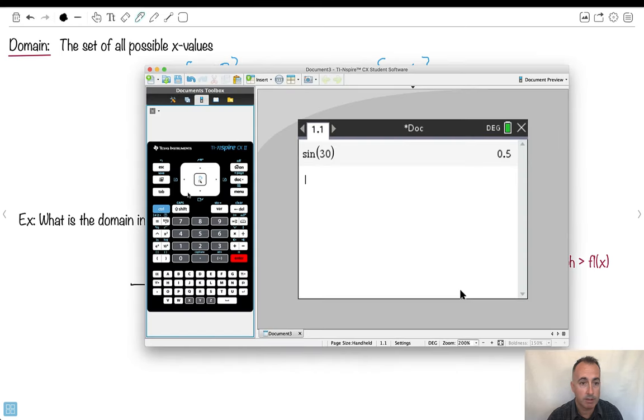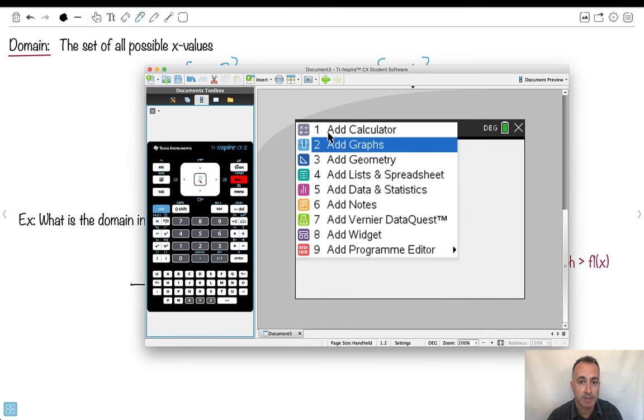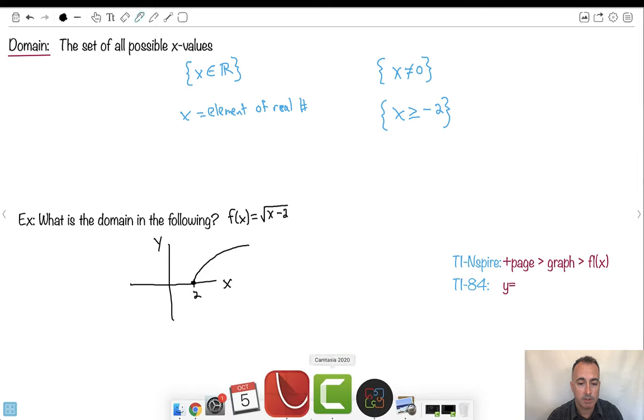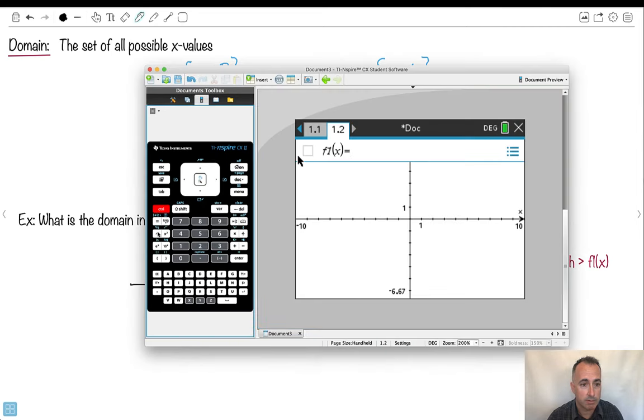If you don't believe me, no problem. Let's actually look at it on a graph. I'm going to open up a new page here. I'm going to see a new graph. By the way, if you're on the TI Inspire, do add page, graph, do f(x). If you're on the TI-84, it's just y equals on the top. So if I go ahead and do this, I want square root of x minus 2. And I get, do you notice it looks like this? It starts off here.